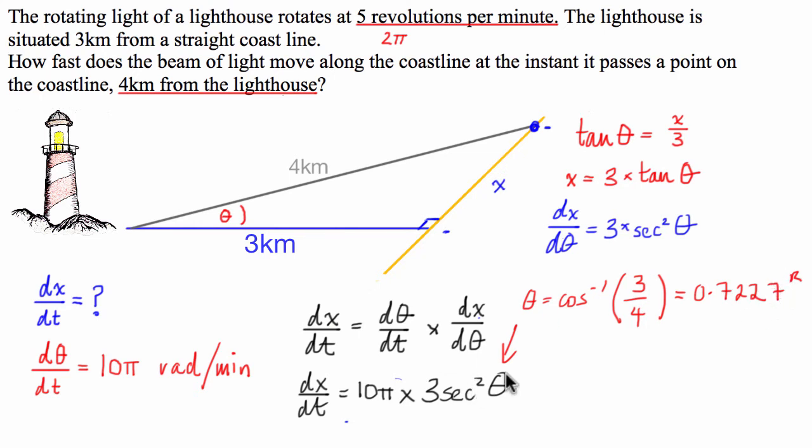So we simply enter this number here into our formula. And we get 10π times 3 sec squared of 0.7227, and that gives us approximately 168 kilometres per minute. It's very important because we had these numbers in kilometres, this is also going to be in kilometres. And because we had our radians per minute in minutes, it's going to be in minutes as well. You would only ever change this to metres per second or something like that if the question explicitly asks you to. If it doesn't, just leave it like this.